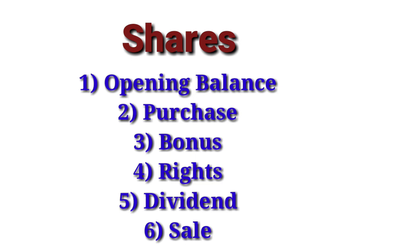Shares are at an easier level. The questions follow a 6-point sequence: (1) opening balance, (2) purchase, (3) bonus shares — given as a ratio — on the debit side, (4) rights shares — also given as a ratio — on the debit side, (5) dividend on the credit side — which has two types: normal dividend and pre-acquisition dividend found in the opening balance, and (6) sale on the credit side. These are the basics you need to master for the shares section.